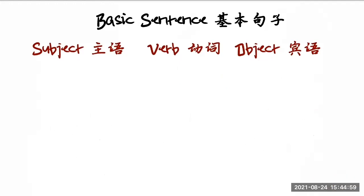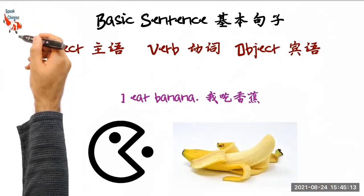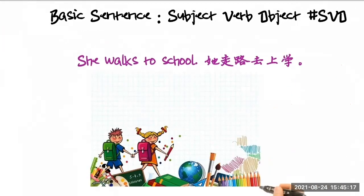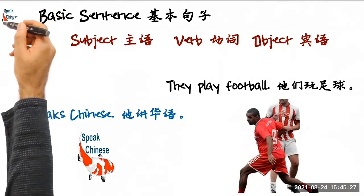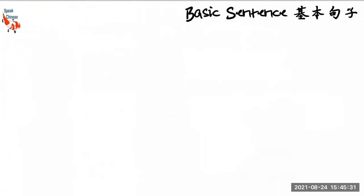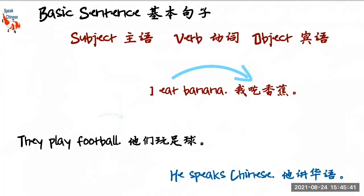In a basic sentence, you will see three things: subject, verb, object. For example: 'I eat banana.' 'She walks to school.' 'He speaks Chinese.' Each of these sentences consists of a subject, a verb, and an object. When translating, you translate word for word. 'I eat banana' — word for word. 'They play football.' 'He speaks Chinese.' It is not very challenging at all, because all you need to do is place those words into the different categories.